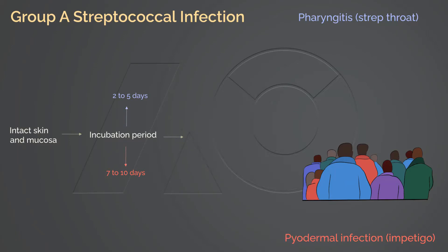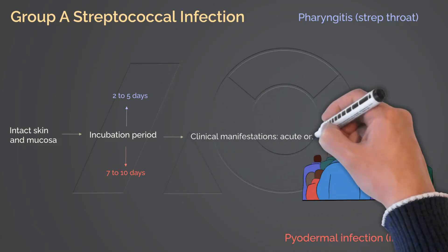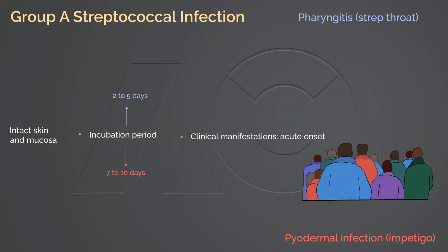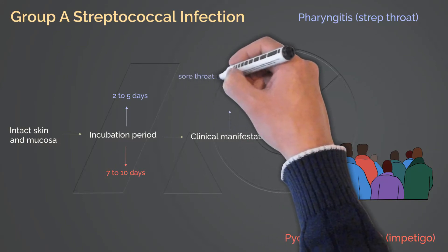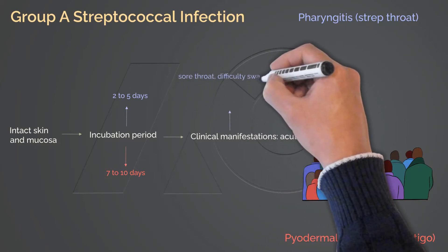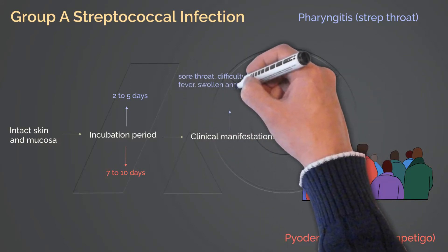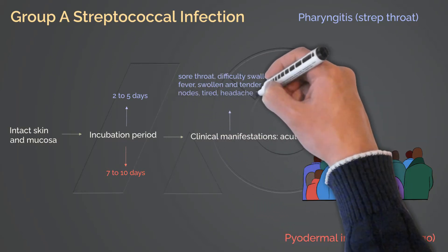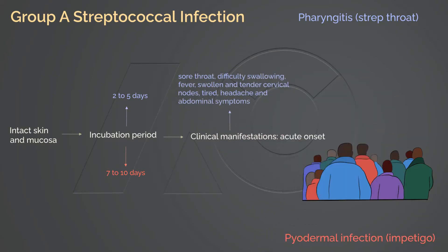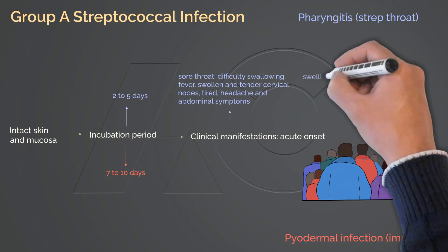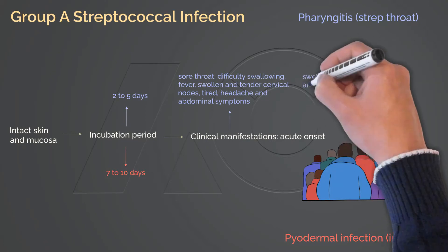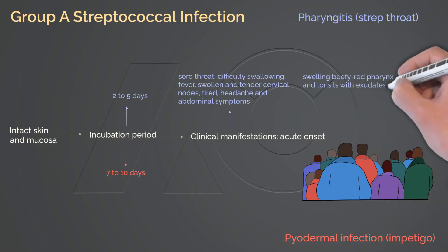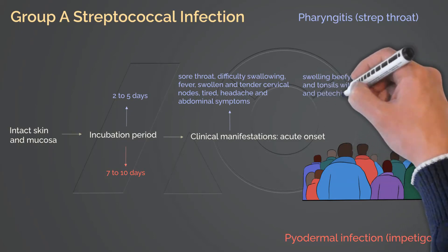After incubation, an acute onset of clinical symptoms manifests. For strep throat, the patient experiences sore throat, difficulty swallowing, fever, swollen and tender cervical nodes, fatigue, headache, and abdominal symptoms. Physical examination shows swelling, beefy red pharynx and tonsils with exudate, as well as petechiae on the palate.